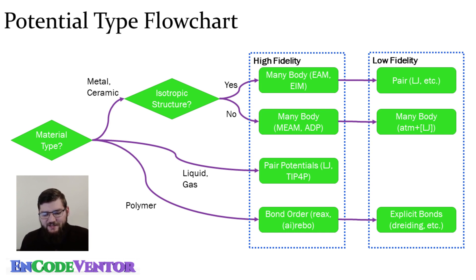Now, if we go to the next material type looking at polymers, like I mentioned, you typically need to do bond order potentials like REACs or REBO. You can also for a low fidelity simulation, you can explicitly model the bonds and use some sort of driving potential where bonds are essentially modeled as springs as well.